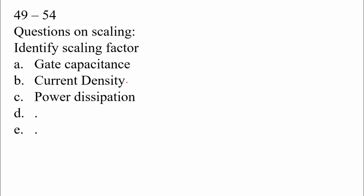And current density, which is I by A, we know the current expression is mu L C ox W by L into VGS minus VTH the whole square. Mu L, no need to scale.